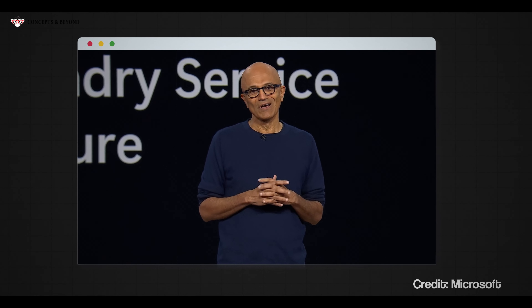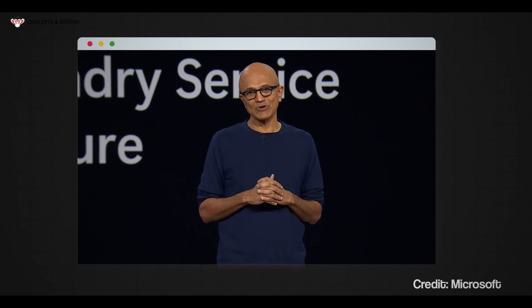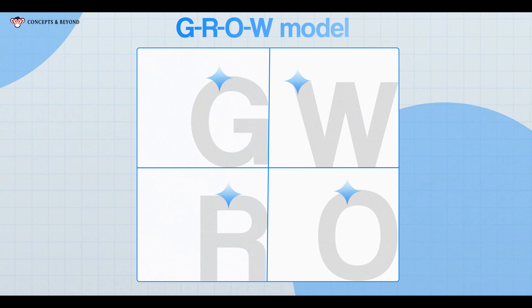When Satya Nadella took over the helm at Microsoft, he started experimenting with the GROW model. The GROW model involves four steps, the first letter of which gives the model its name. It's easy to understand this model, but very hard to implement.